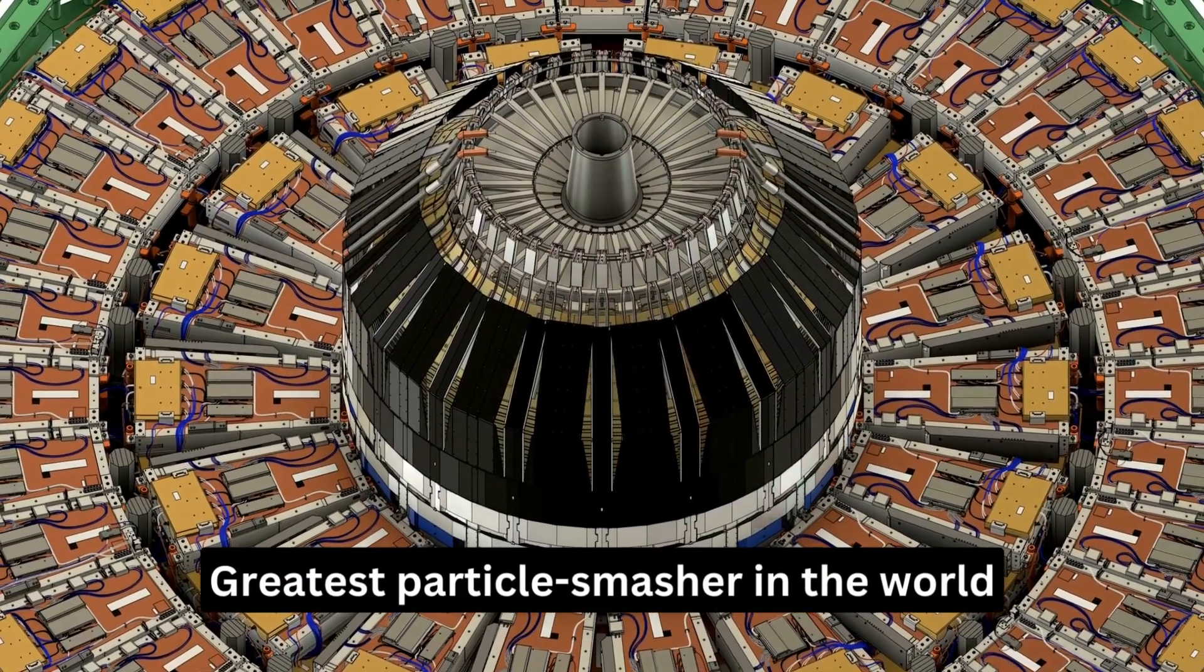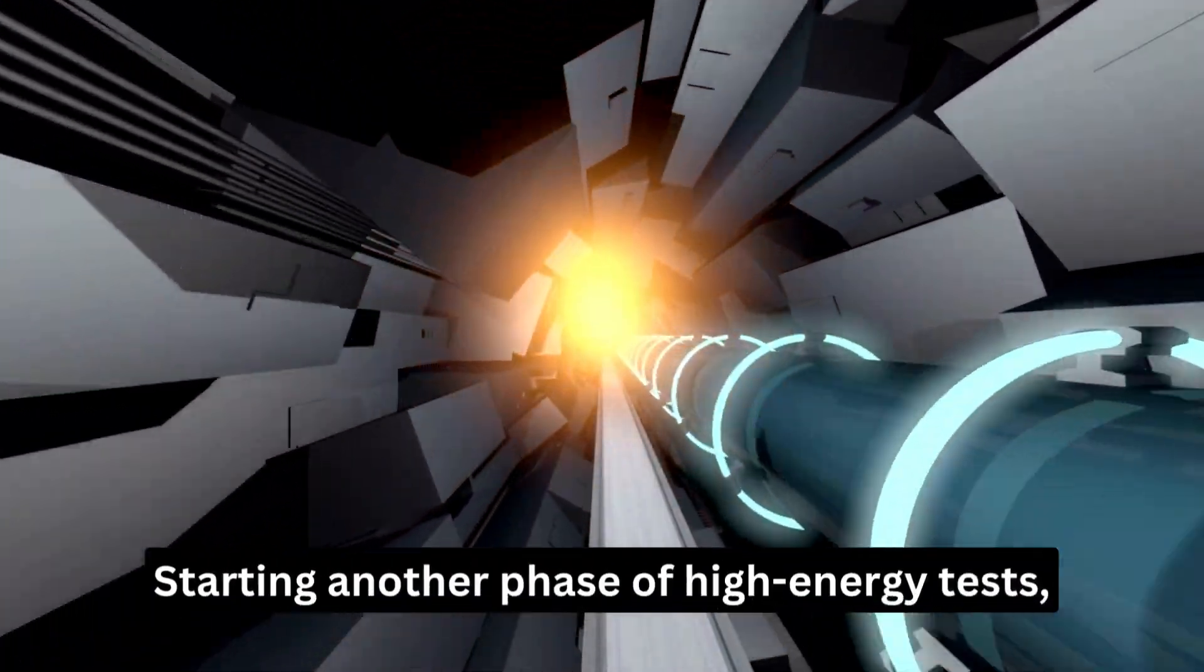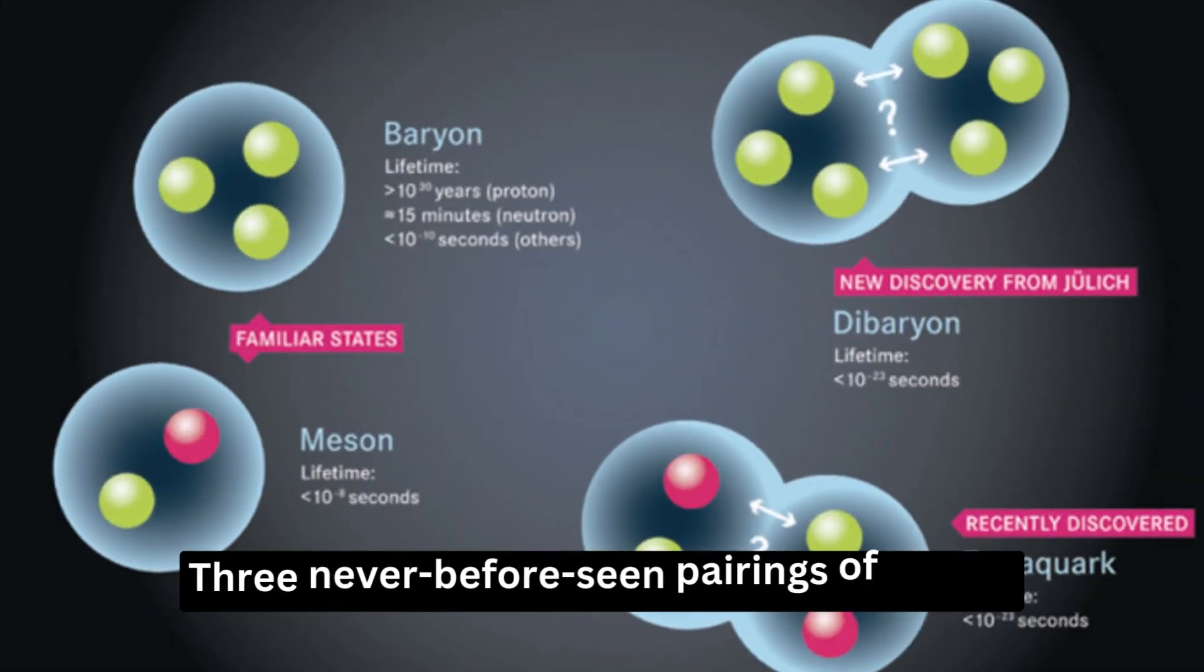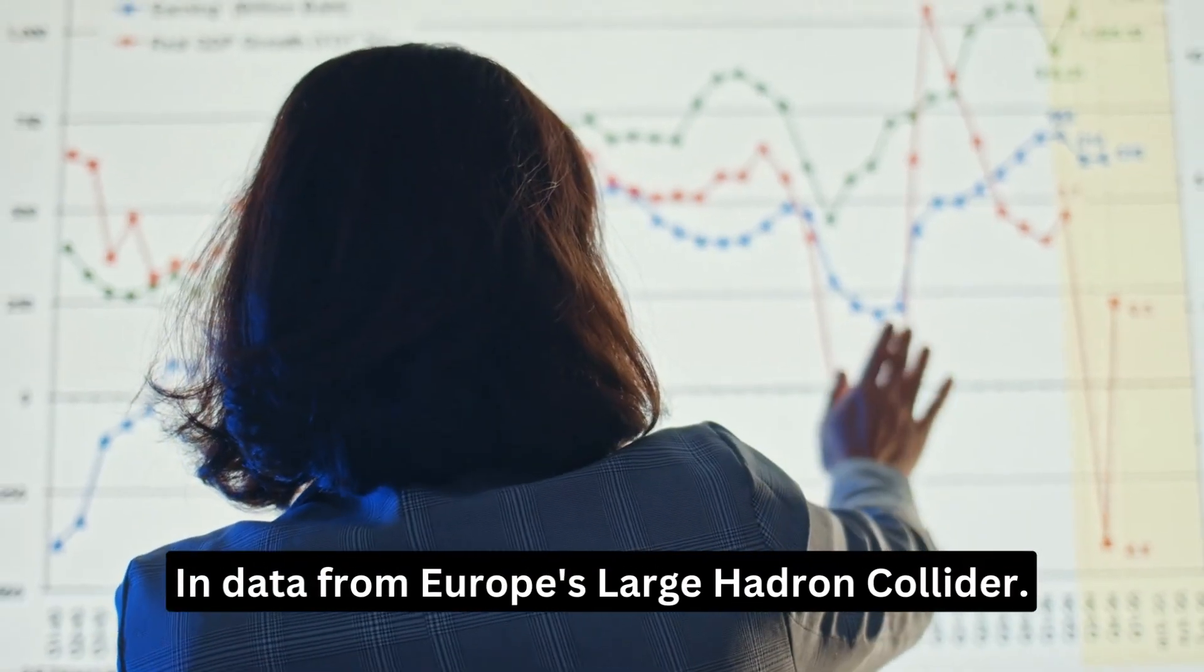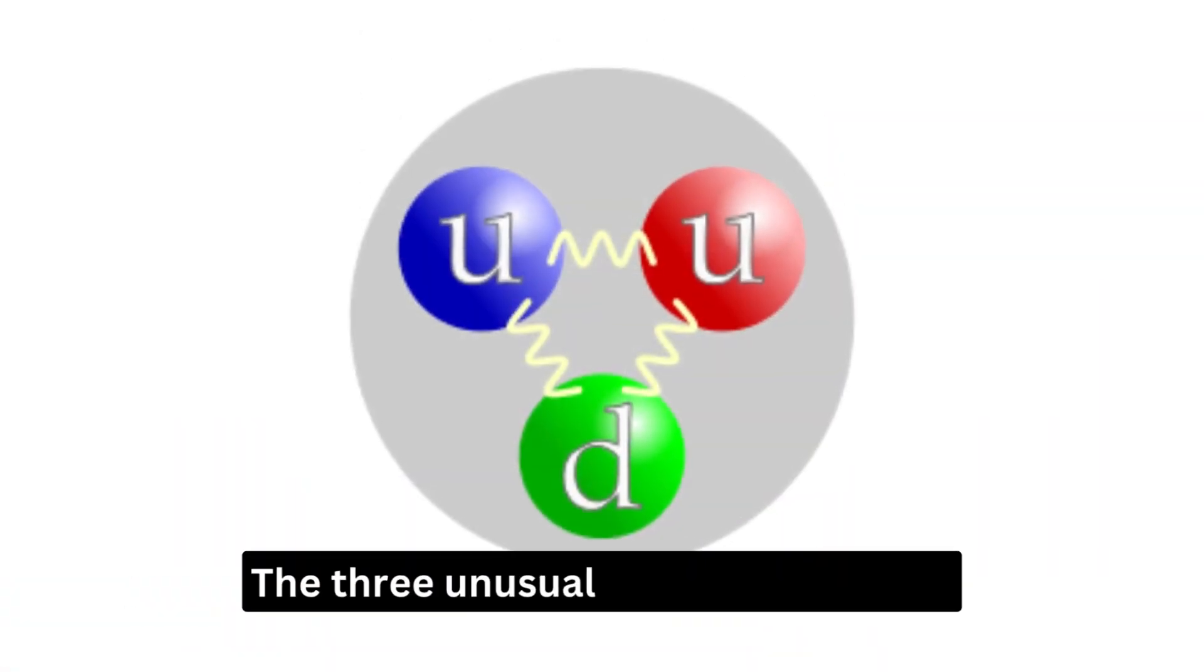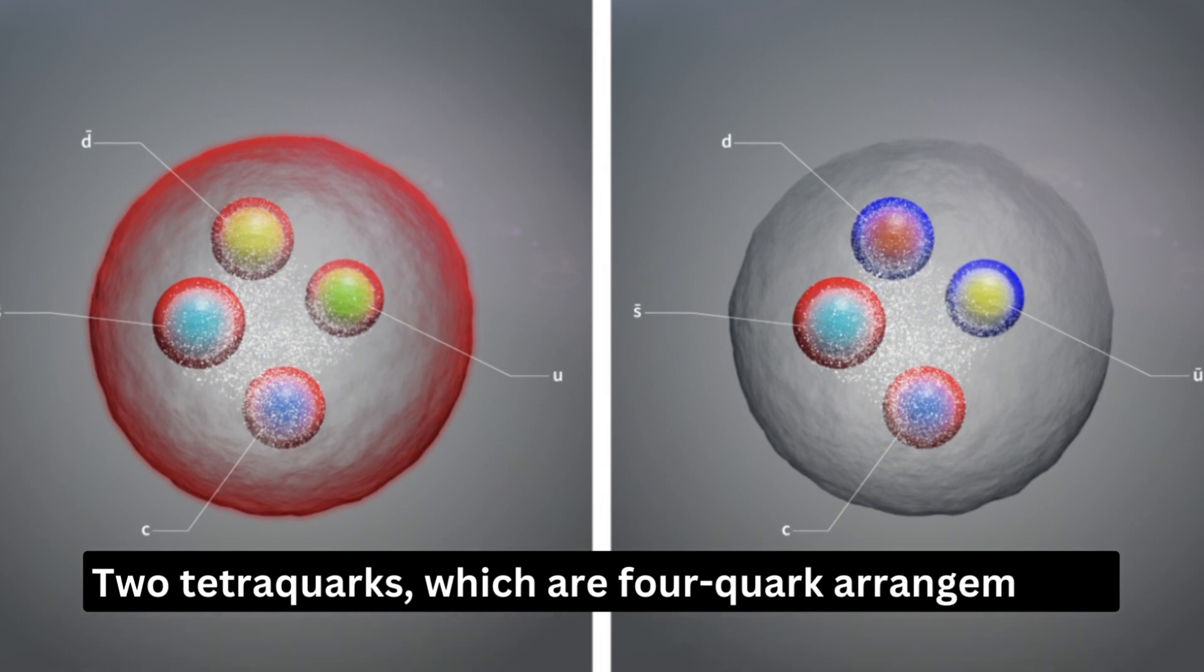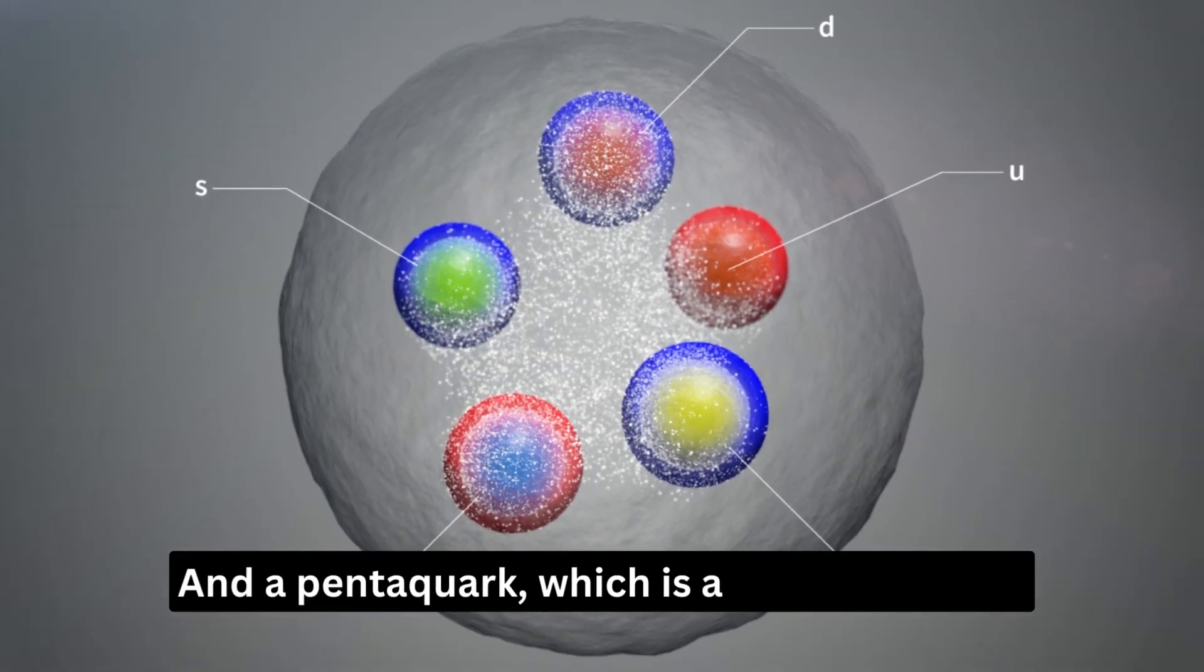Just as the greatest particle smasher in the world is starting another phase of high-energy tests, physicists claim they have discovered evidence for three never-before-seen pairings of quarks in data from Europe's Large Hadron Collider. The three unusual component types comprise two tetraquarks, which are four quark arrangements, and a pentaquark, which is a five-quark unit.